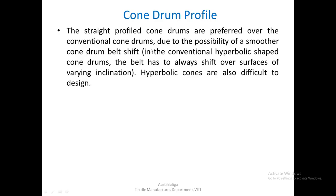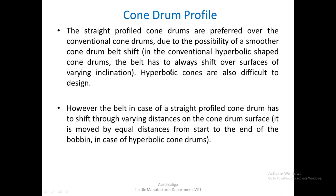Straight profile cone drums are preferred over conventional cone drums due to the possibility of a smoother cone drum belt shift. In the conventional one with hyperbolic shaped cone drums, the belt has to shift over surfaces of varying inclination, and hyperbolic cone drums are also difficult to design. However, if using a straight profile cone drum, the belt has to shift through varying distances on the cone drum surface.